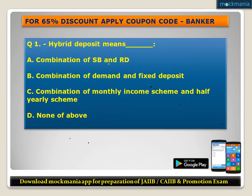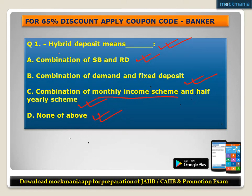Question number one: Hybrid deposit means? Options are: A) combination of SB and RD, B) combination of demand and fixed deposit, C) combination of monthly income scheme and half yearly scheme, D) none of the above. The correct answer is B - combination of demand and fixed deposit. That is called hybrid deposit.